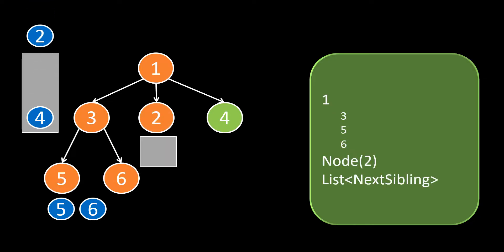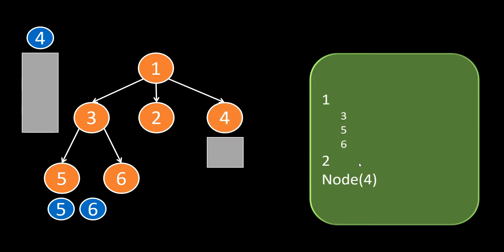As node 5 does not have any children, we move upward as node 6 also does not have any child. Now as we move to the next sibling of node 3, we get node 2 which has no child, so we process node 2 and move to the next sibling. Again, 4 has no child so we just process 4. This becomes our pre-order traversal for the N-ary tree shown here.